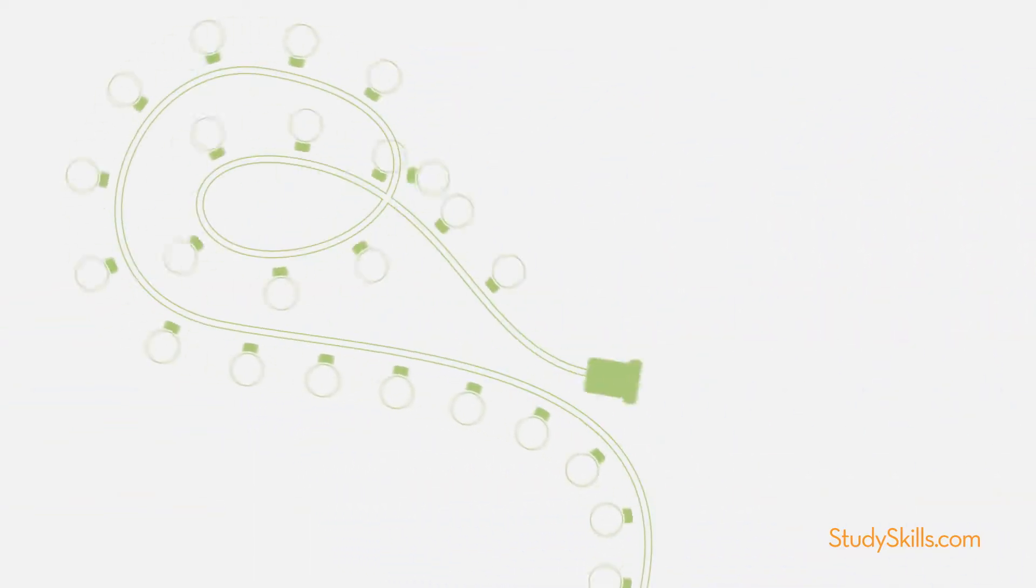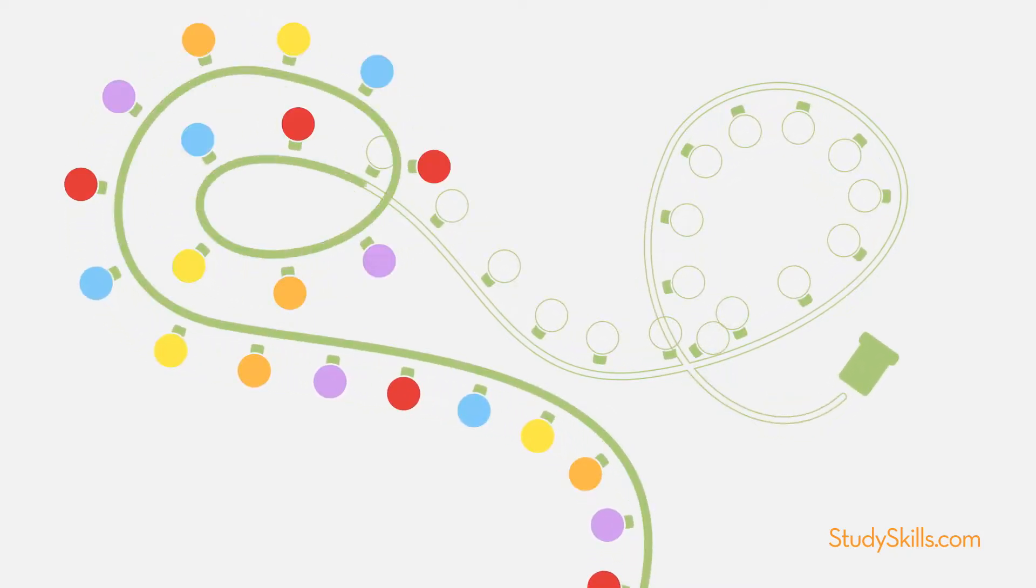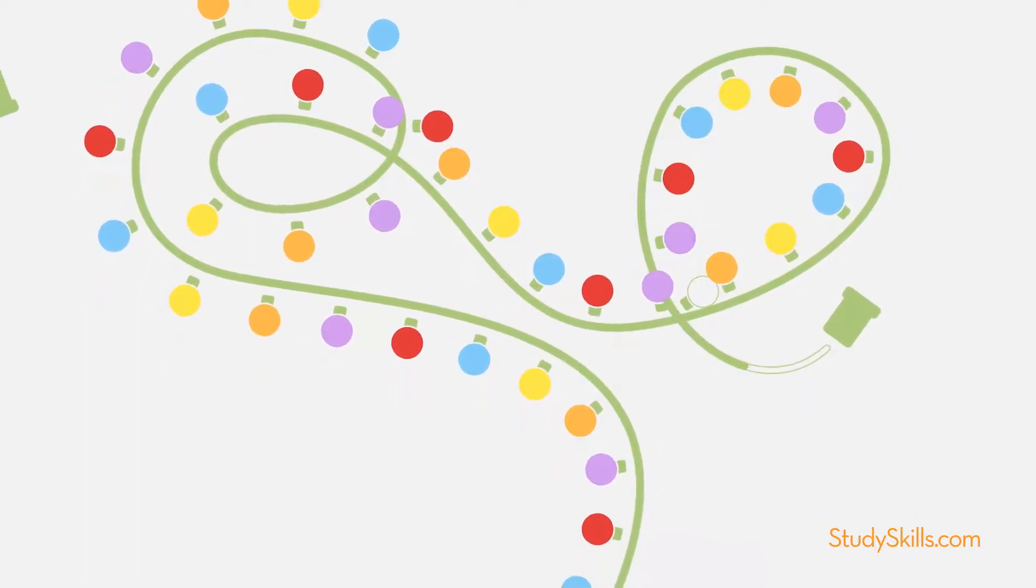Neurons are like the wires on this string of party lights. Power flows through the brain wires to different sections of the brain, just like power flows through the wires to light up each bulb.